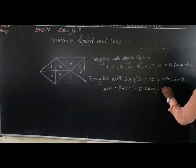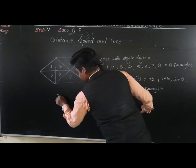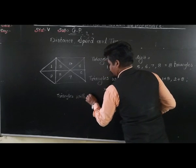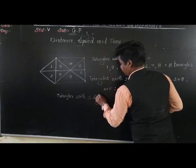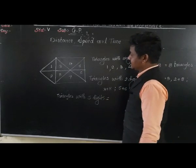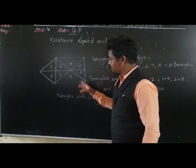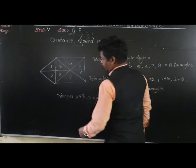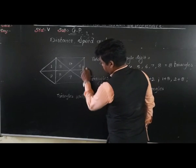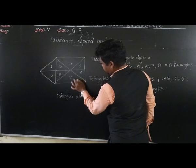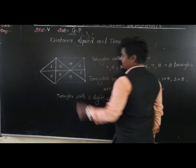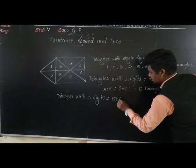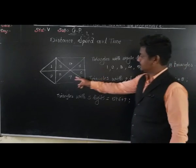Now, triangles with 3 digits. Which combinations of 3 digits form a triangle? 5, 6 and 7 — these 3 parts together — are they forming a triangle? Yes. So 5 plus 6 plus 7 together forms a triangle.